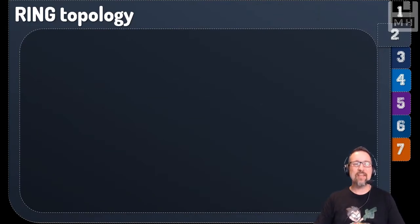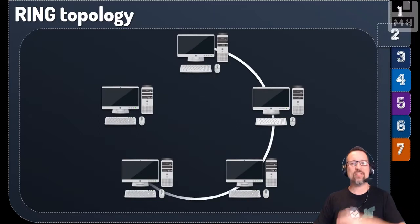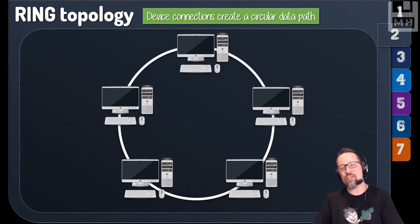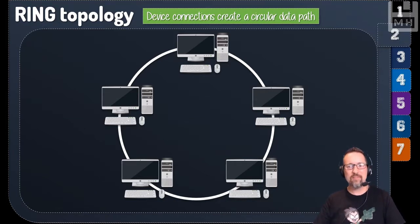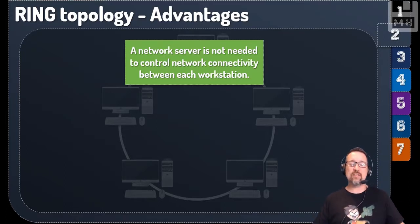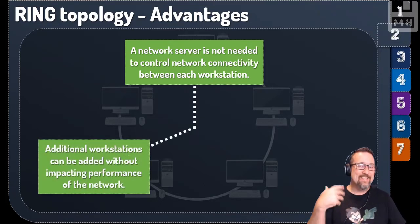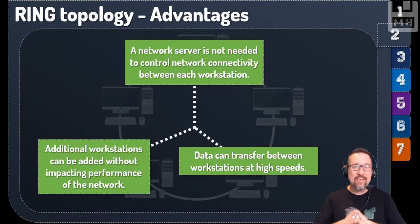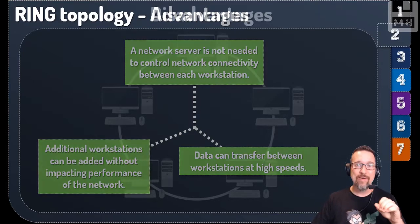The next topology is ring topology. In a ring network, the computers are connected to each other creating a circular data path — data goes from one to the other and around in a circle. Advantages include: a network server is not necessarily needed to control connectivity, additional workstations can be added without impacting performance, and data transfer between workstations remains high speed.